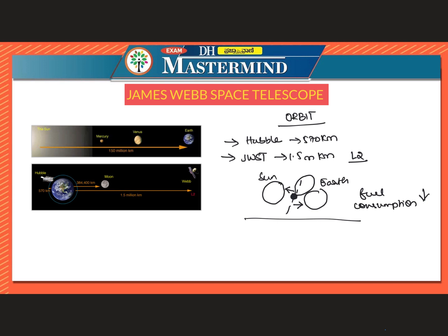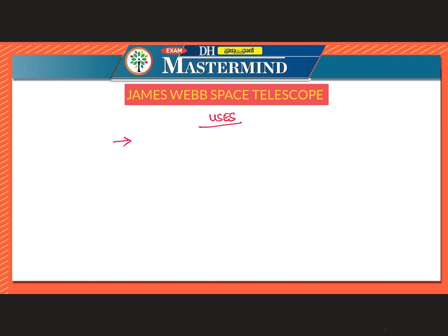We can see the relative positions in the picture: Hubble Space Telescope was orbiting around 570 km from Earth, whereas James Webb Space Telescope is at L2, about 1.5 million km away. For reference, the Moon is only 384,400 km from Earth.